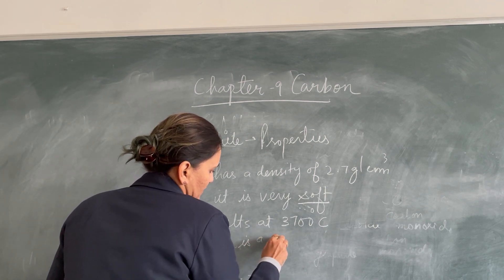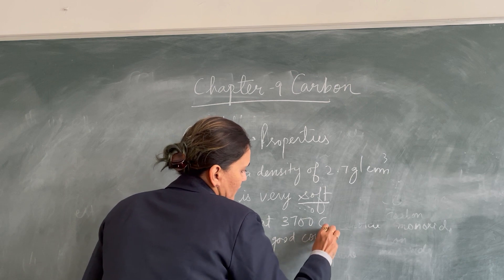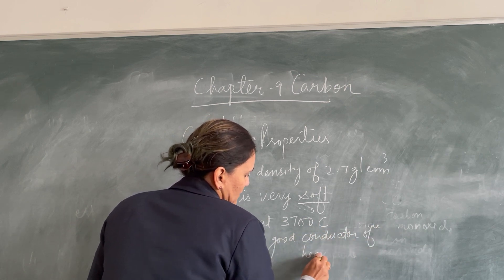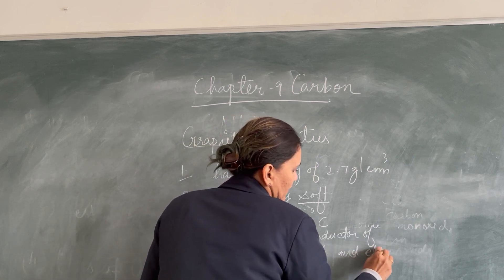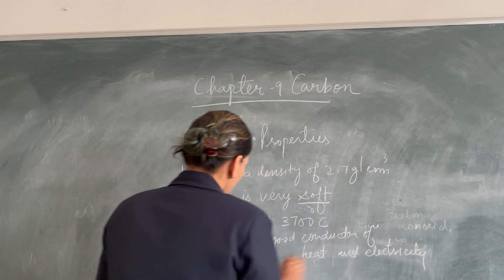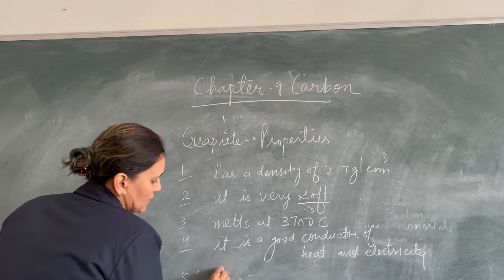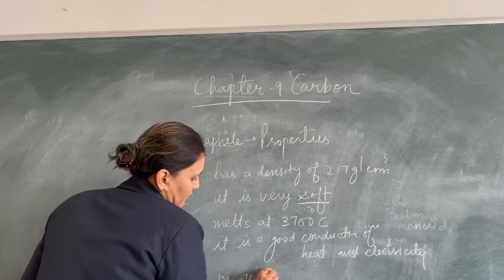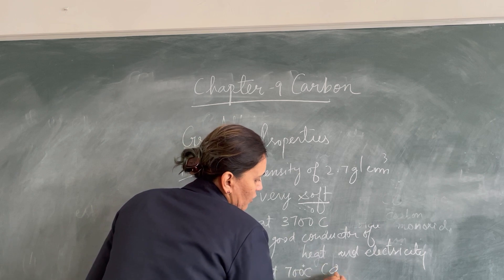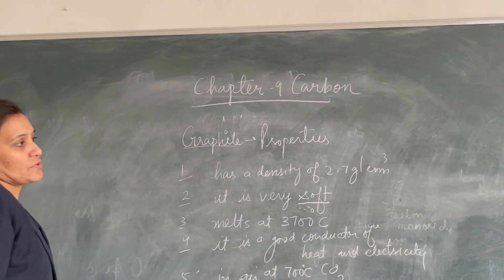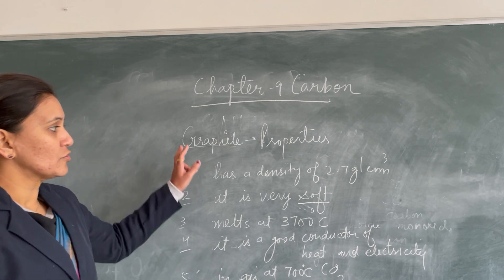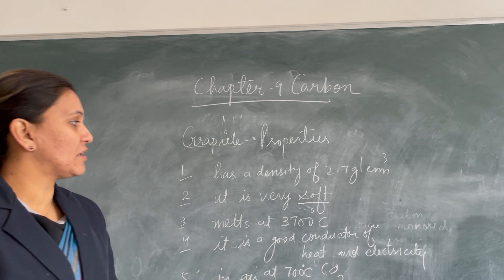Graphite is a good conductor of heat and electricity, meaning it can allow heat and electricity to pass through it. Last but not least, it burns in air at 700 degrees Celsius to give carbon dioxide (CO₂). So these are some of the physical properties of graphite which you should remember.